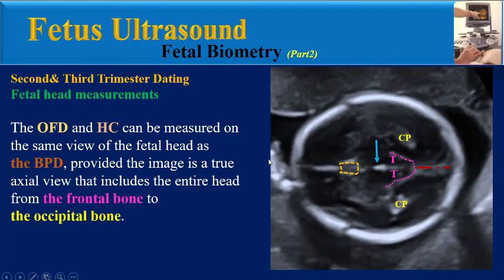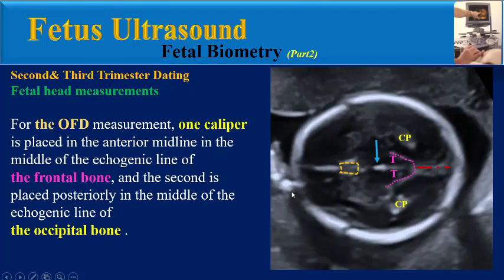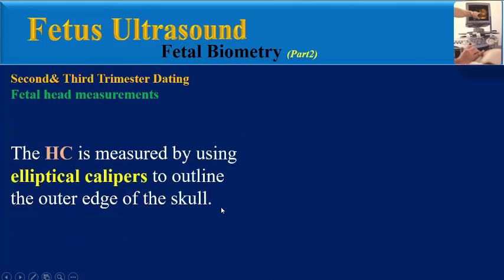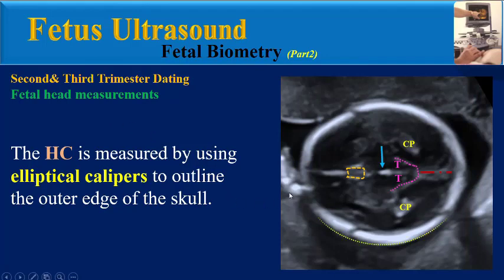The OFD and head circumference can be measured on the same view as the BPD, provided it is a true axial view including the entire head from the frontal bone to the occipital bone. For the OFD measurement, one caliper is placed in the anterior midline in the middle of the echogenic line of the frontal bone, and the second is placed in the middle of the echogenic line of the occipital bone.